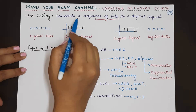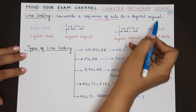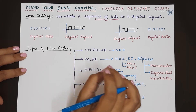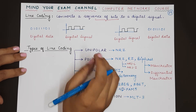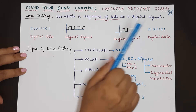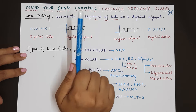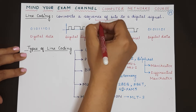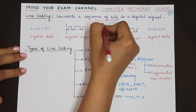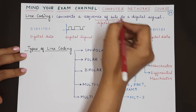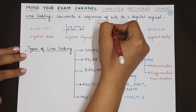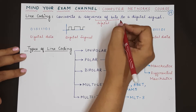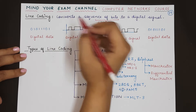Line coding is the process of converting a sequence of bits into a digital signal. In previous videos we learned that whenever you have to send data over a communication network you need to use either analog signals or digital signals. So line coding is the process of representing or encoding digital data, which is in the form of a sequence of bits, into digital signals.